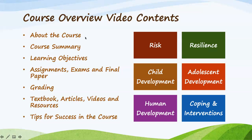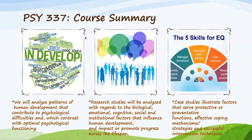In our course, we will analyze patterns of human development that contribute to psychological difficulties in contrast with optimal psychological functioning. Research studies will be analyzed with regards to biological, emotional, cognitive, social, and institutional factors that influence human development and impact or promote progress across the lifespan.